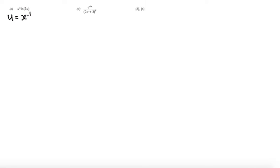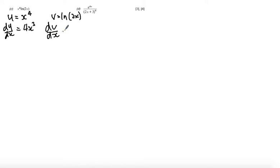Part C has a product of two functions, so this is going to require the product rule. I'm going to take u equal to x to the power of 4, which when differentiated gives du by dx as 4x cubed. Then v is the natural log of 2x. Notice that 2x is a function inside the function natural log, so I need to use the chain rule. Differentiating natural log of 2x gives 1 over 2x, then multiplied by the derivative of 2x, which is 2, giving 2 over 2x, which simplifies to 1 over x.